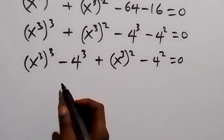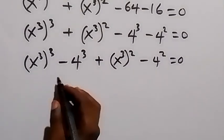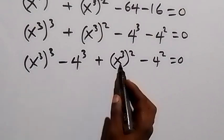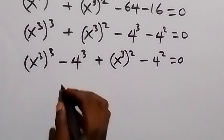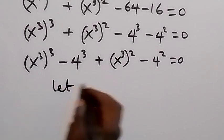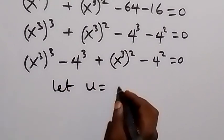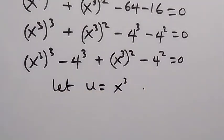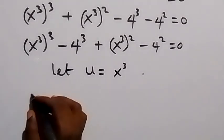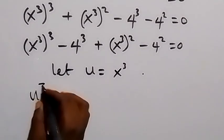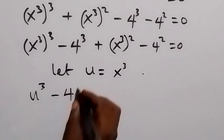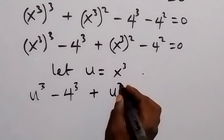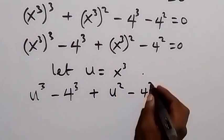To make things easier, let's apply a substitution. Let u equal x raised to power 3. Then we can write the expression in terms of u: u cubed plus u squared minus 4 cubed minus 4 squared equals zero.